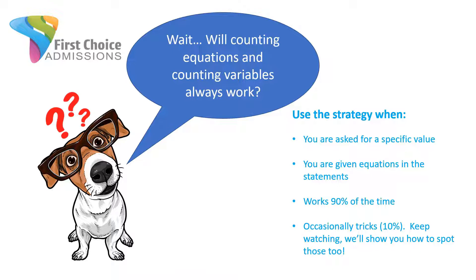Keep watching because we're going to show you how to spot when they're trying to trick you. Nice job — just keep practicing to get better and better. Anytime the GMAT puts you in a data sufficiency situation and asks you for a specific value, this strategy is totally going to help you out. Also remember your free bonus gift — three strategies to raise your GMAT score 30 points today. It's yours for free; you can download it right in the description. See you next time.